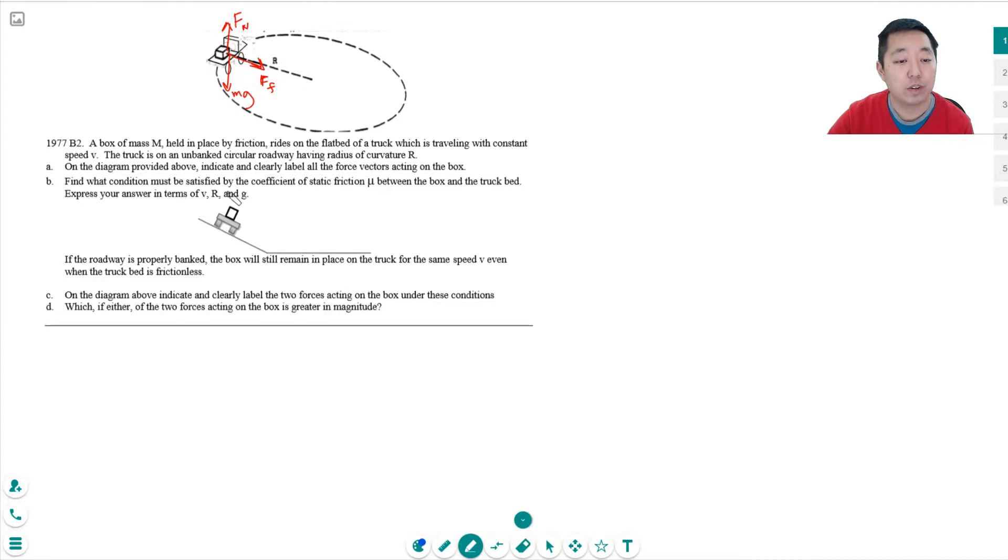Find what condition must be satisfied by the coefficient of static friction between the box and the truck bed. Express your answers to V, R, and G.